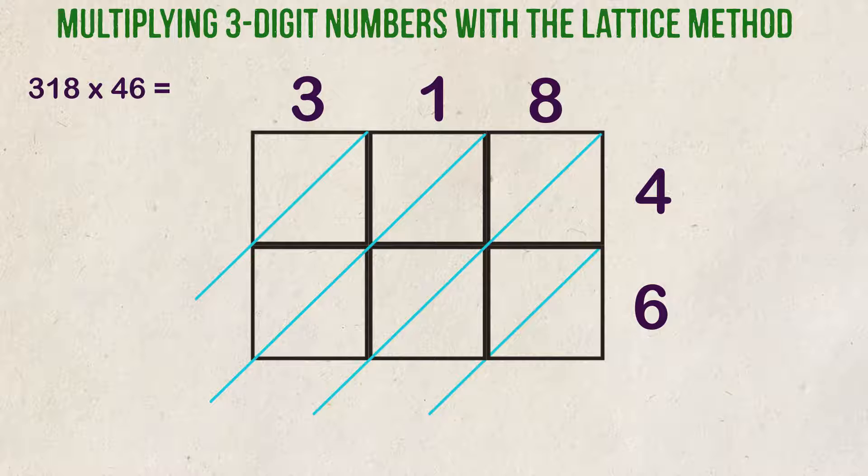We start from the right and multiply our top digit by one of the rows on the side. So, eight times four is equal to 32. We put the three-digit on the left-hand side of the diagonal and two goes on the right-hand side. We then multiply eight times six. That answer is 48, so four goes on the left and eight goes on the right.